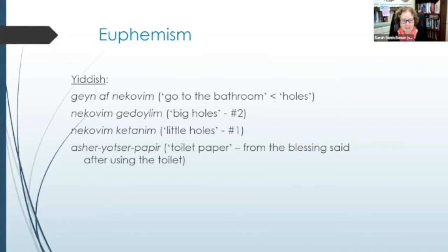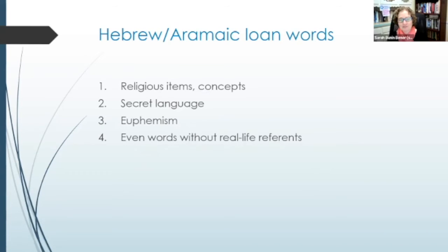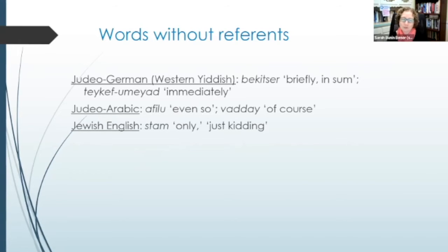Yiddish has some favorite euphemisms. There's a blessing said after going to the bathroom that mentions all the holes in the body working properly — 'nikavim.' So one way to say 'go to the bathroom' in Yiddish is 'ge'en af nikavim' — with the distinction between 'nikavim gedoylim' or 'nikavim ketanim,' big holes or little holes. And 'asher yotzer papir' is a euphemism for toilet paper, since 'asher yotzer' is the name of that blessing — 'yotzer' meaning 'to create,' blessing God for creating us in a way that enables us to do all we need to do. Other loanwords include 'bekitser' meaning 'briefly' in Judeo-German, 'umiyad' meaning 'immediately,' 'afilu' meaning 'even so,' 'vadai' meaning 'of course' in Judeo-Arabic, and 'stam' meaning 'only' or 'just kidding' in Jewish English.